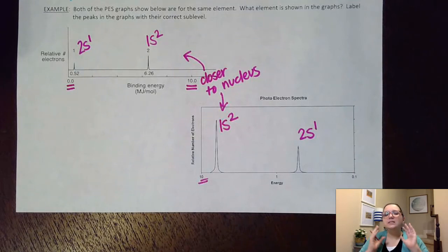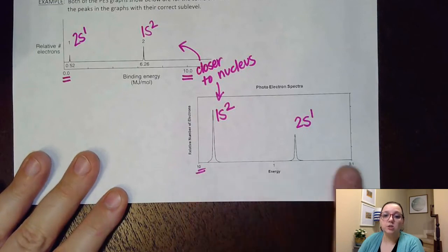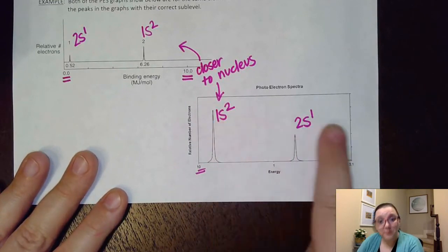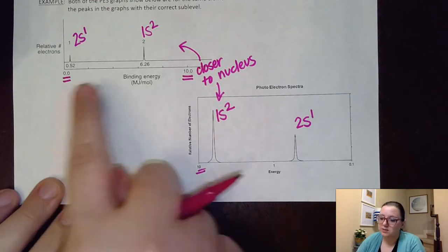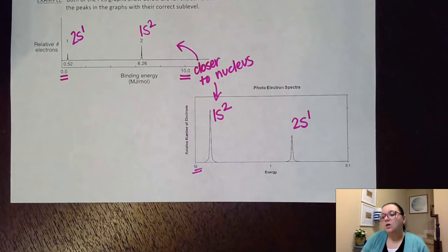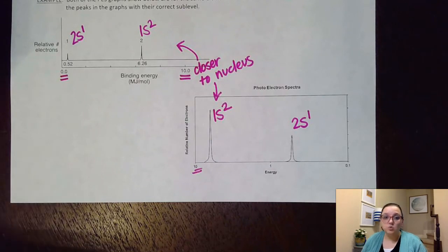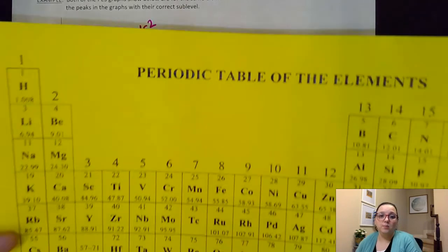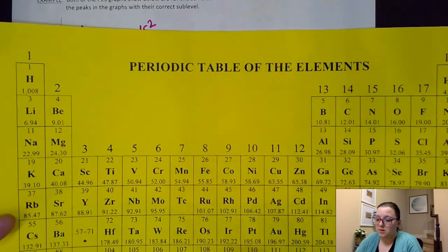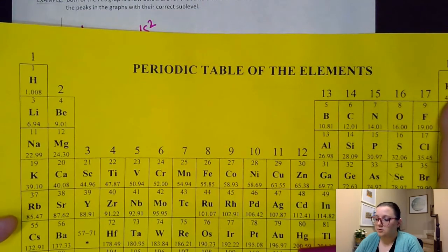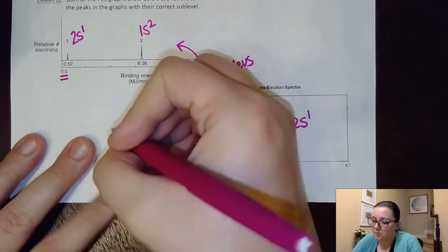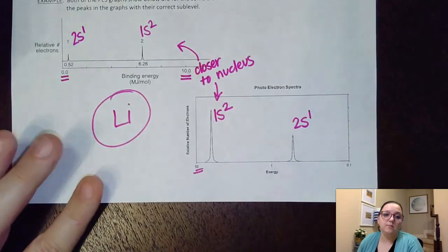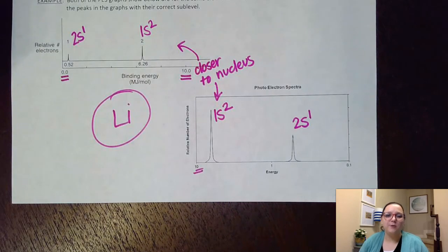I will say this. Typically, these graphs go from high energy to low energy because that puts the peaks in filling order. However, you always want to be careful just in case they flipped it around on us. So once I figure out it's 1s2, 2s1, then I would just go look on my periodic table and see who that would be. So 1s2 would fill up hydrogen and helium. So 2s1 would end with lithium. So both of these graphs happen to be for the lithium atom, even though they are flipped graphs.